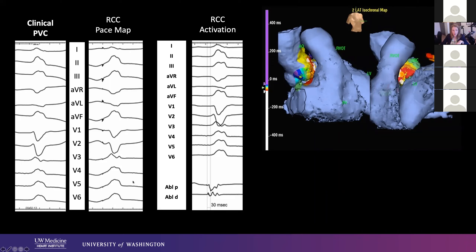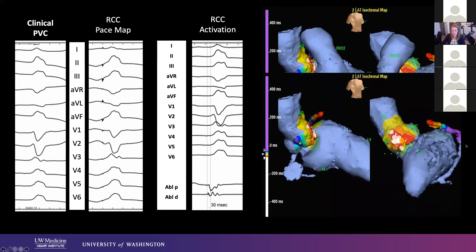This was the clinical PVC in the lab. This was pace mapping from the right cusp — a 97% match in modern verbiage. You can see that all the nooks and crannies are in the correct direction, and even the more isoelectric leads are matching up. I find those isoelectric leads get switched very easily if you're not in the right spot. My distal ablation signal was 30 milliseconds out in front. I mapped the great cardiac vein as well — we were reasonably early in the GCV, but earlier in that right cusp. And ablation in the cusp eliminated the PVC.